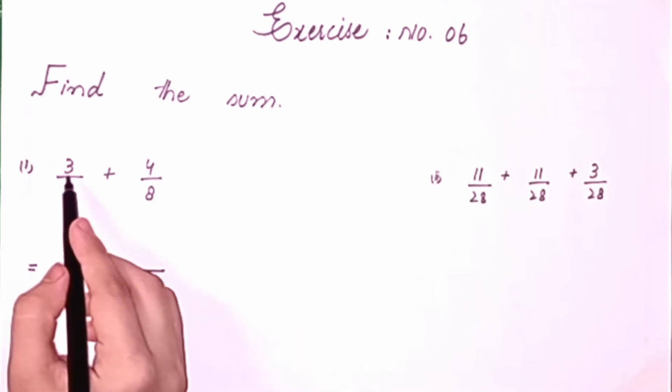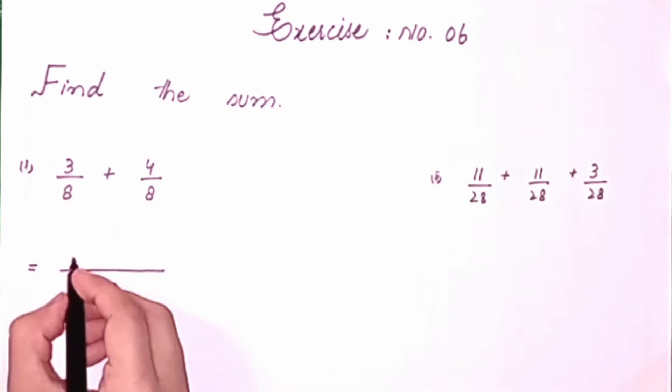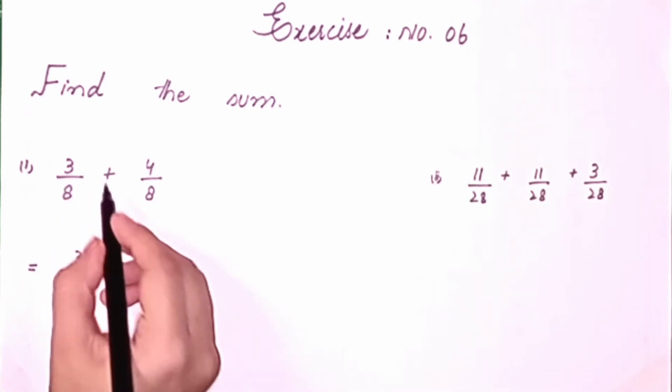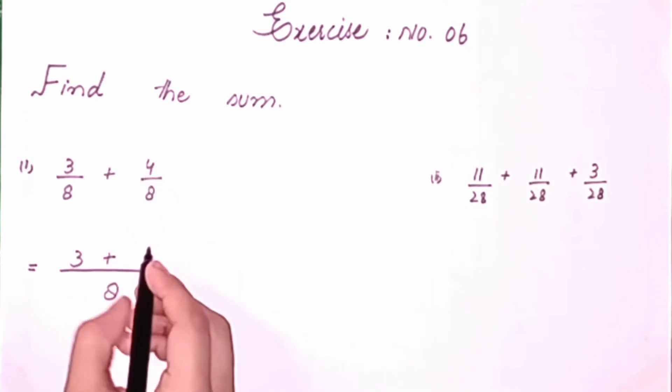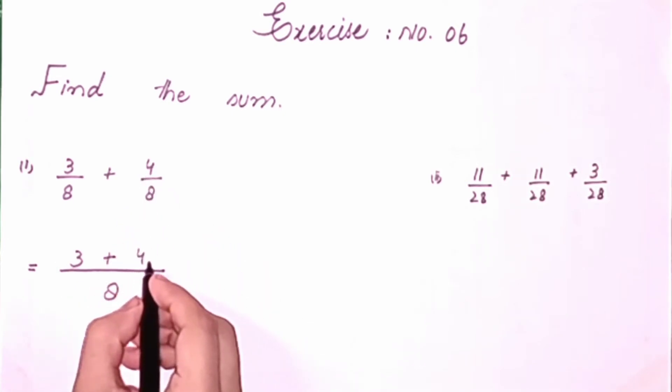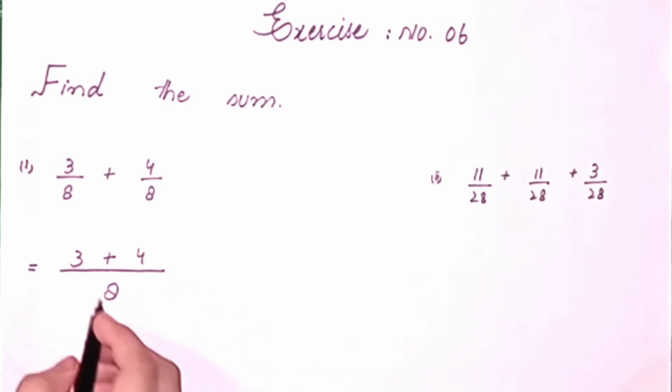Now we will write 3 as it is, write plus 4 as it is. Then we will make equals to. We will write 8 again as it is. Then we will add 3 plus 4, which equals 7. So our answer is 7 upon 8.